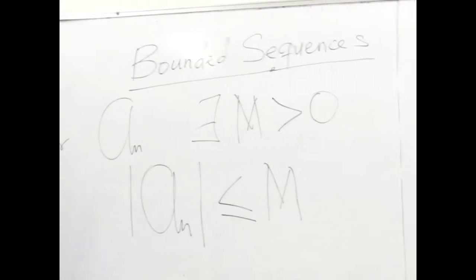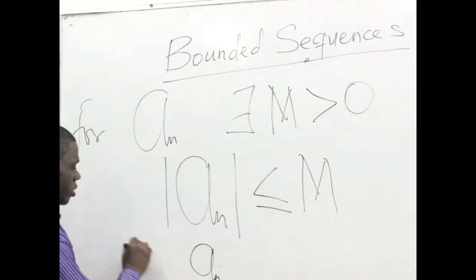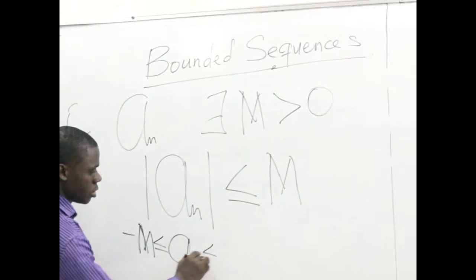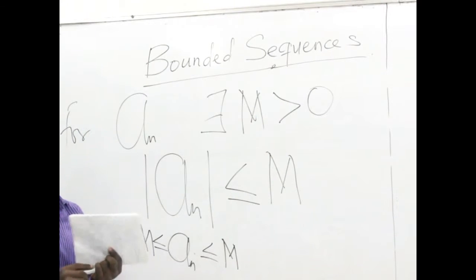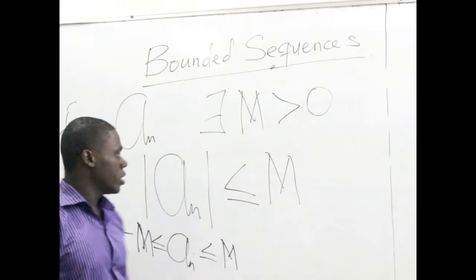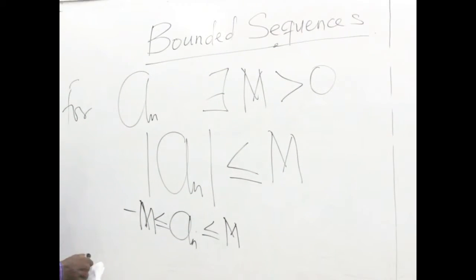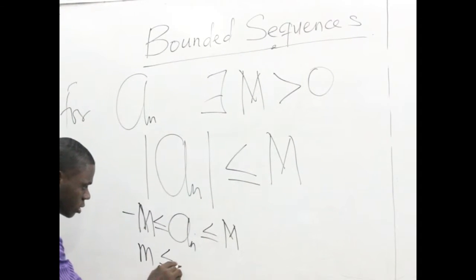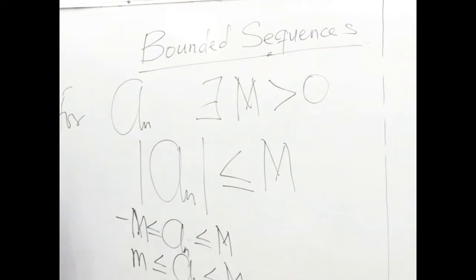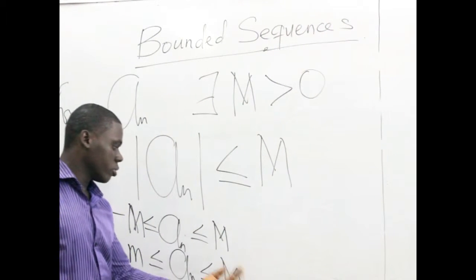We can simplify this further: we have negative m less than or equal to the sequence, which is less than or equal to M. Because of the beginning here, we say that m is a positive or negative number. Putting m here as negative gives a contradiction, so we represent that by small m. We will refer to this as the lower bound of this particular sequence, and the big M here represents the upper bound of the sequence.